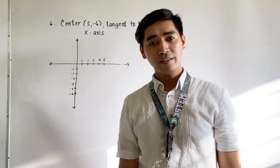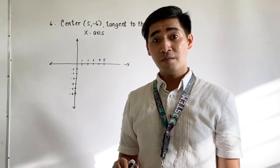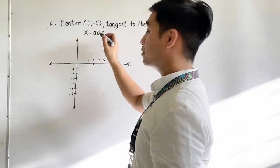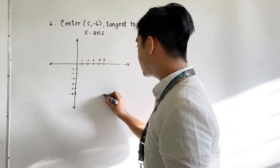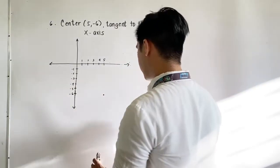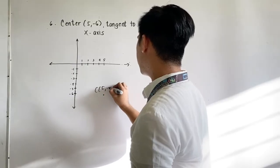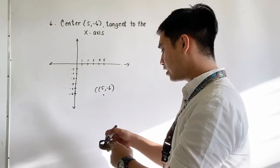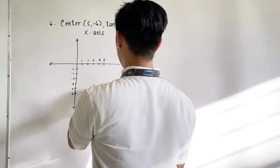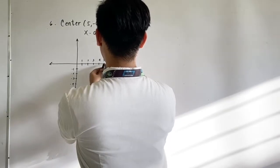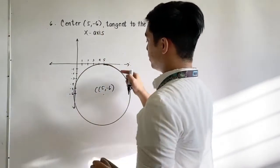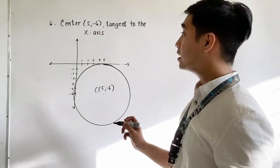For the next problem, what if we're given the same situation but it is now tangent to the x-axis? Same process — let us draw and graph the center. It is located at 5, negative 6, same center. Then it is tangent to the x-axis, so the circle and the x-axis will meet at one point. Drawing the circle, this is now our graph of the circle having center at 5, negative 6 and tangent to the x-axis.